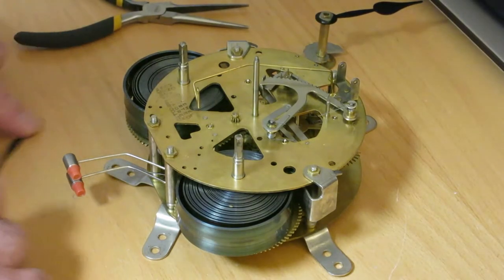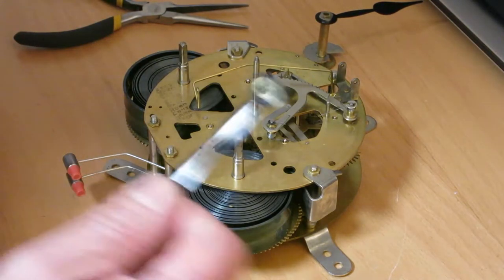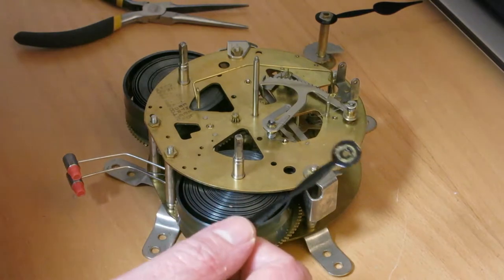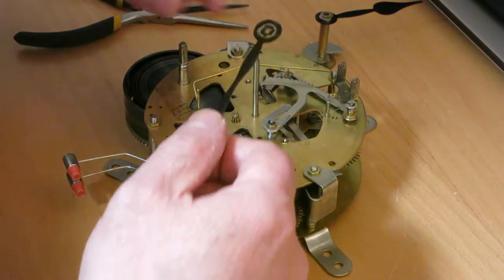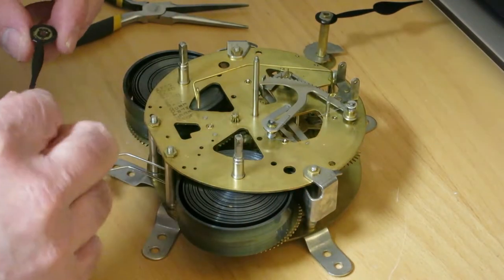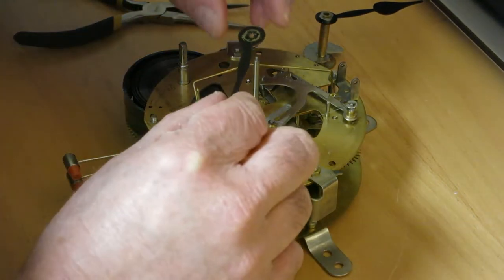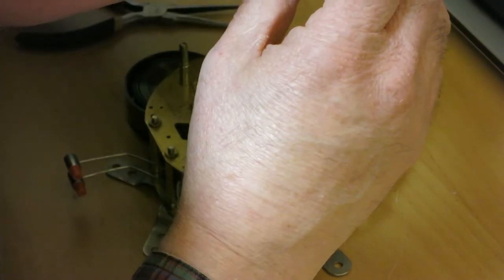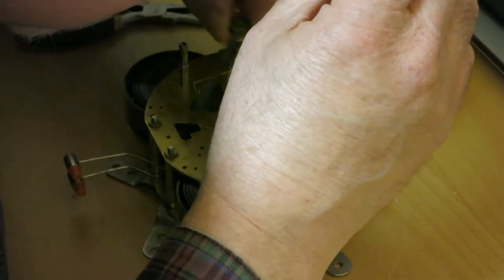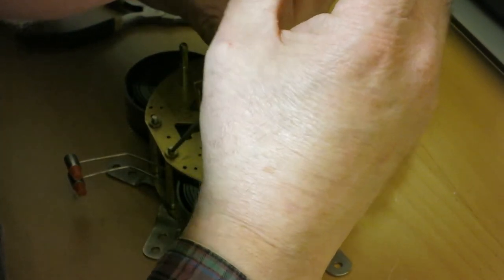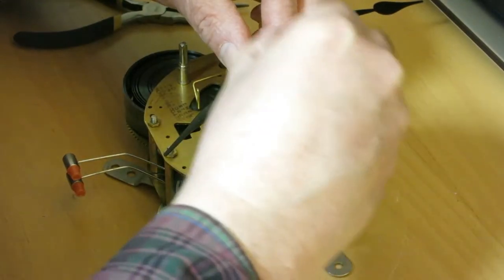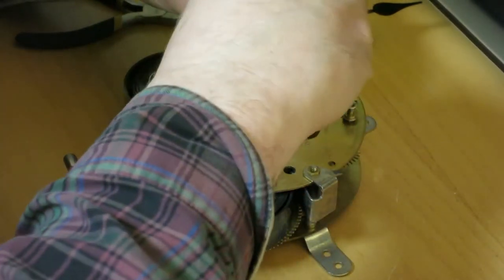To get going here, the first thing we have to do is figure out where the minute hand pointed to the 12. So the first thing I'm going to do is fasten the minute hand on to wherever I like, wherever it currently happens to be, and it happens to be right there, and I'm going to tighten that on for just a moment.